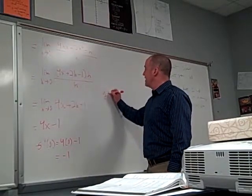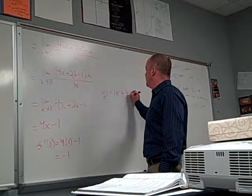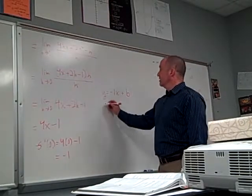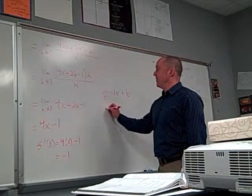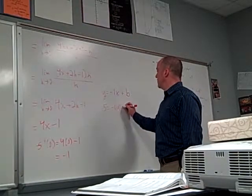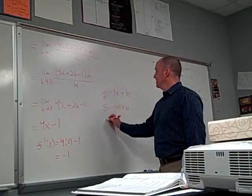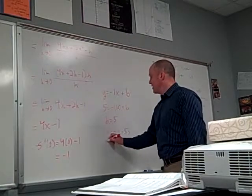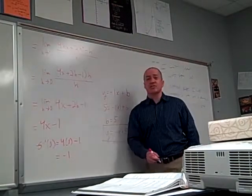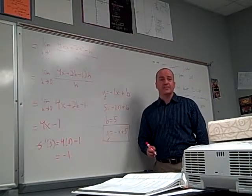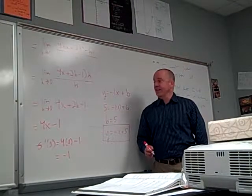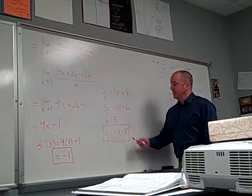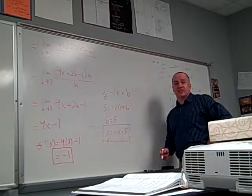So now f prime of 0 is negative 1. So we are looking for a line y equals negative 1x plus b that passes through the point 0, 5. So just say 5 equals negative 1 times 0 plus b. So b is 5. So y equals negative x plus 5 is the line which barely touches this parabola at the point 0, 5. So this is the answer to part A of that question. Find the derivative at that point. This is part B. Find the equation of the tangent line that hits it at that point.